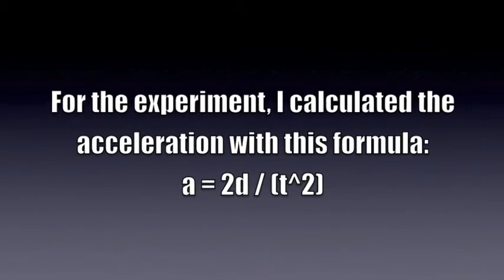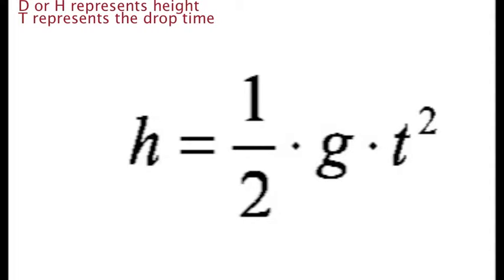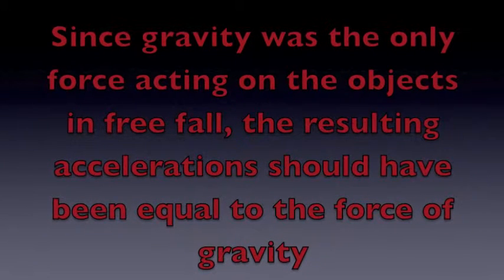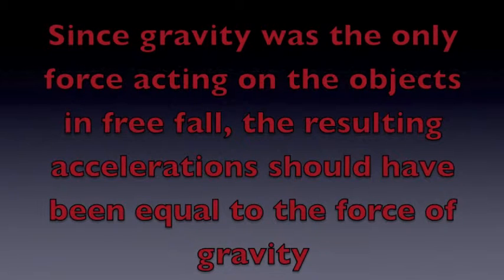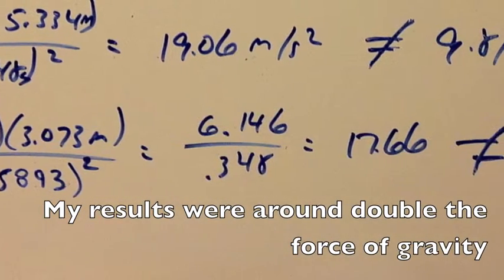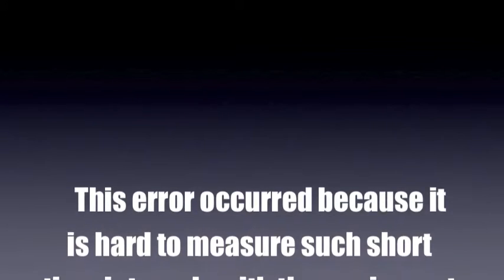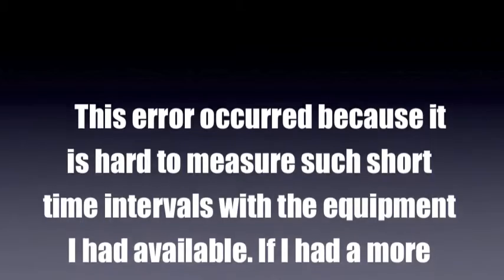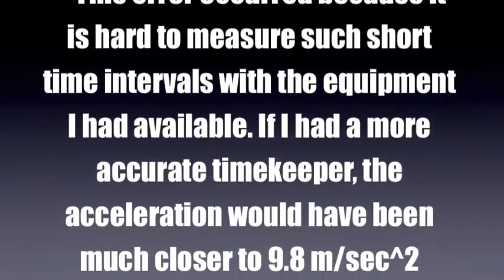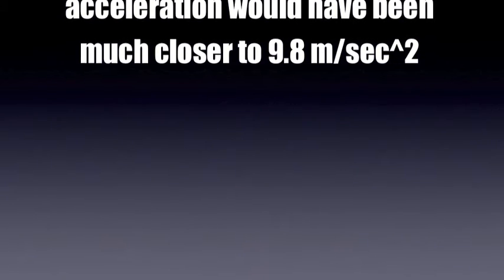For the experiment, I calculated the acceleration with this formula. Since gravity was the only force acting on the objects in free fall, the resulting acceleration should have been equal to the force of gravity. My results were around double the force of gravity. This error occurred because it is hard to measure such short time intervals with the equipment I had available. If I had a more accurate timekeeper, the acceleration would have been much closer to gravity.